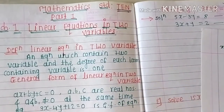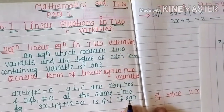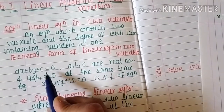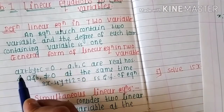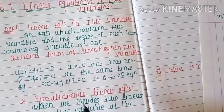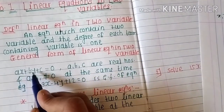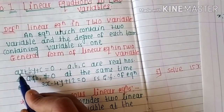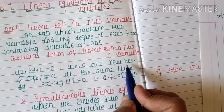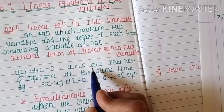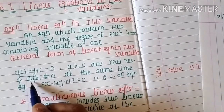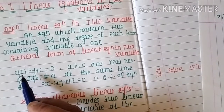The general form — the standard form — of a linear equation in two variables is ax plus by plus c equals zero. Here x and y are variables, and a, b, c are real numbers having some constant values.